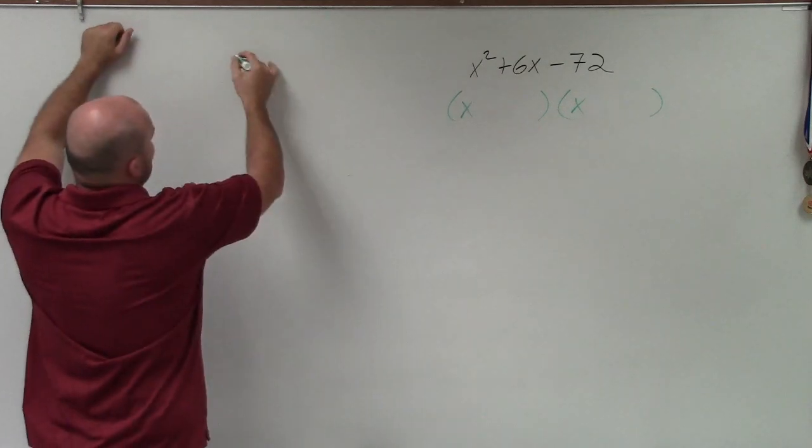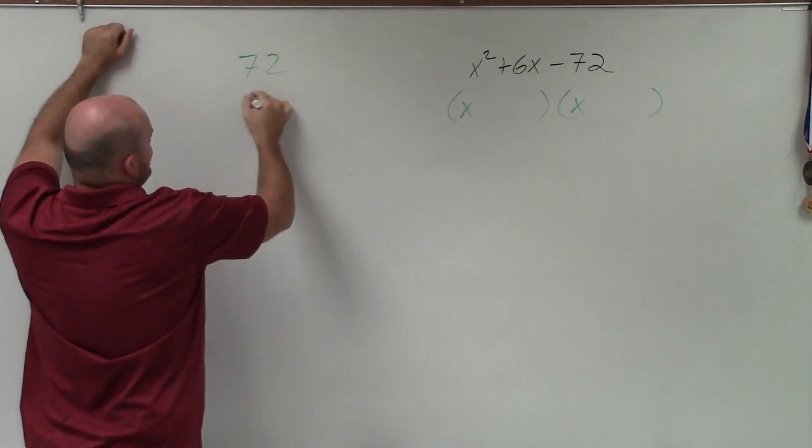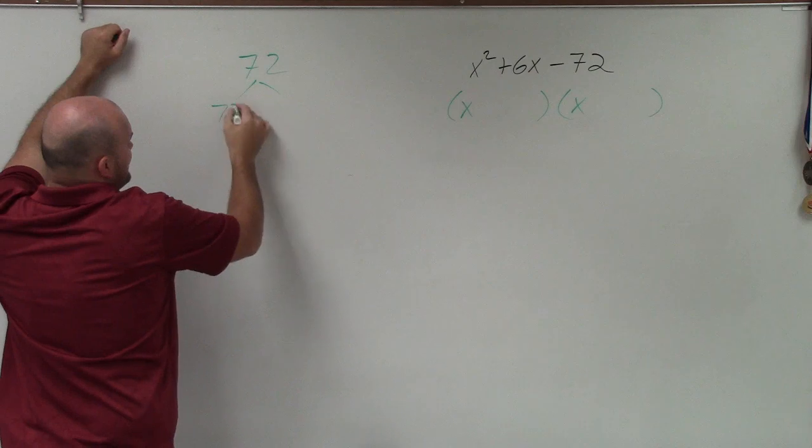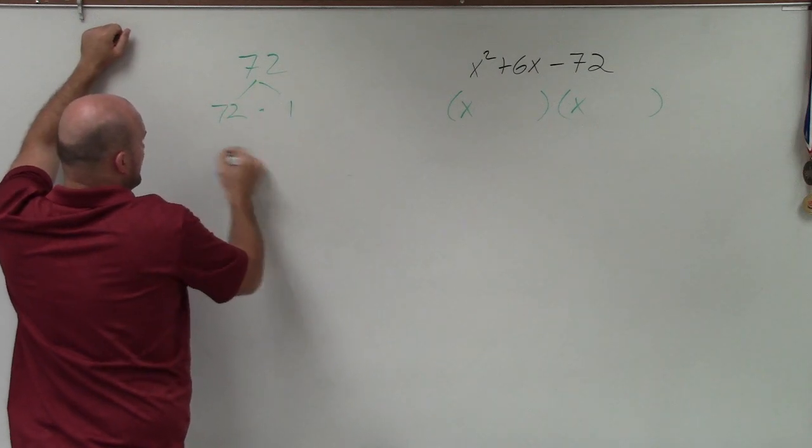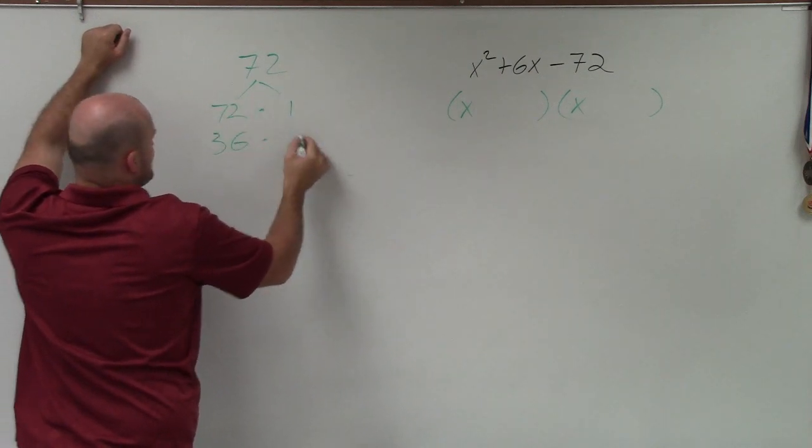Now, forget about negative 72 for a second. Let's just look at 72. The numbers that multiply to give me 72 are 72 and 1. I could do 36 times 2.